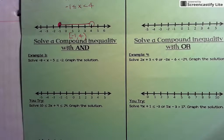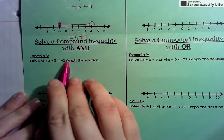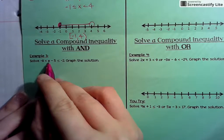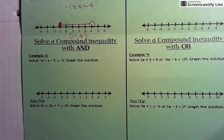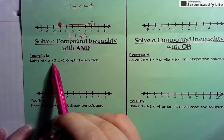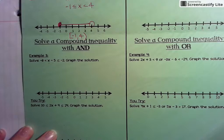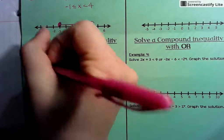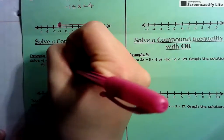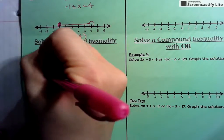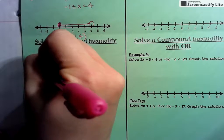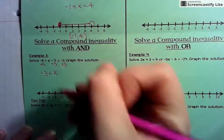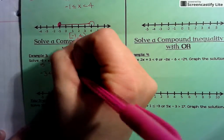Now we're going to solve compound inequalities with the 'and' statement. Your goal is to get X by itself, but because it's two inequalities together, whatever you do to the center expression you must also do to the left and right sides. To get X by itself, add 5 to all parts: negative 8 plus 5 gives negative 3, so negative 3 is less than X, and negative 2 plus 5 gives 3.